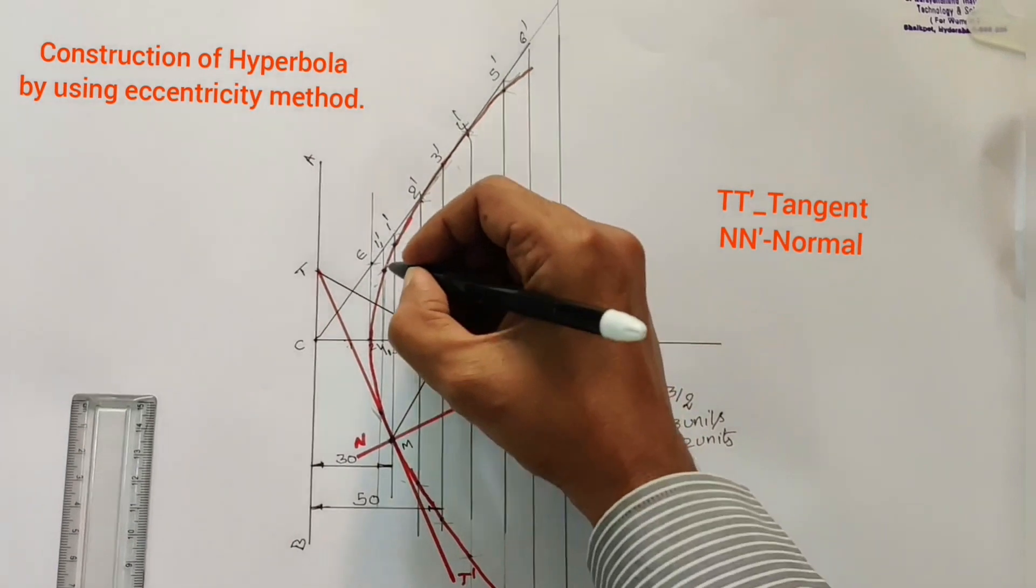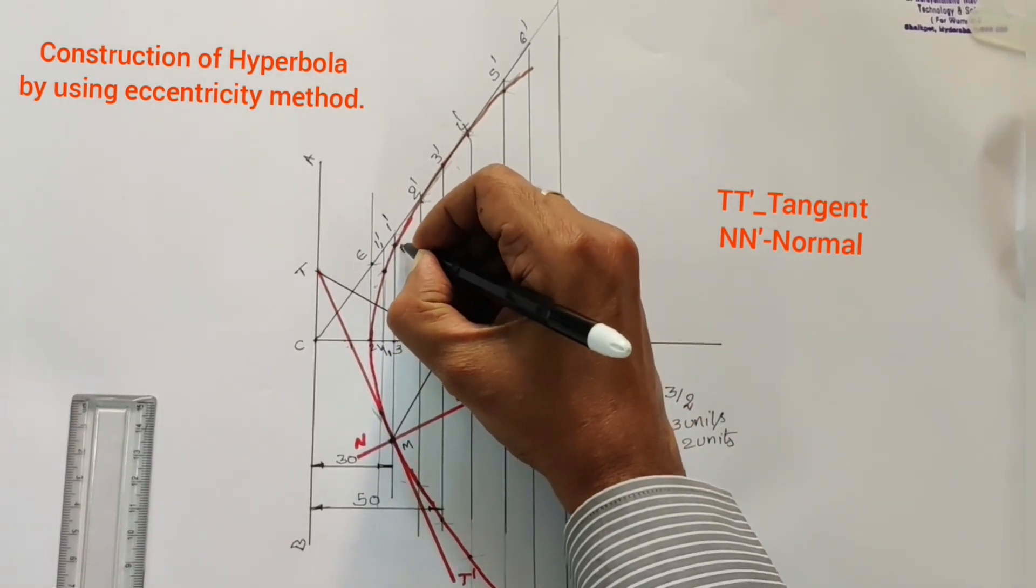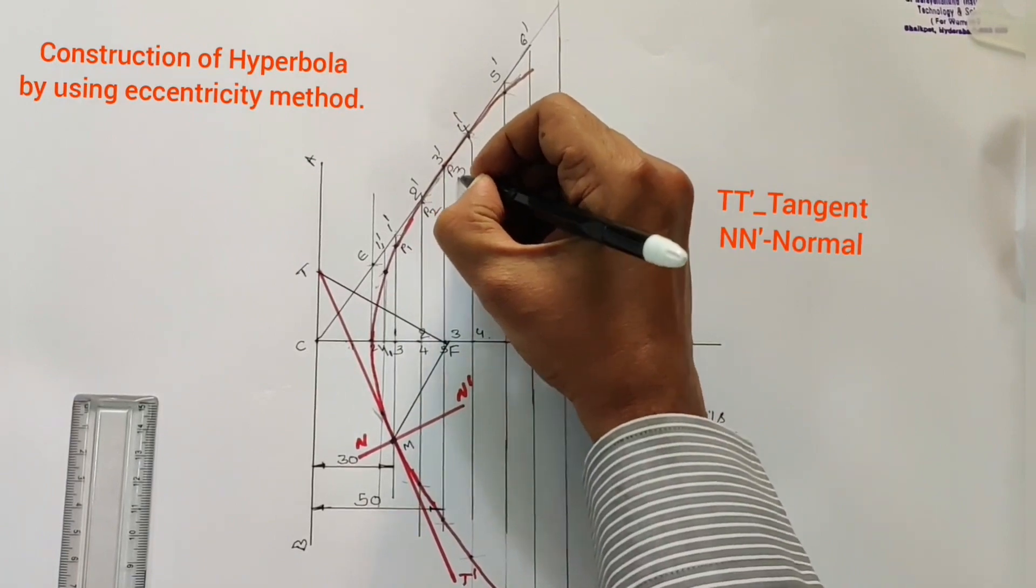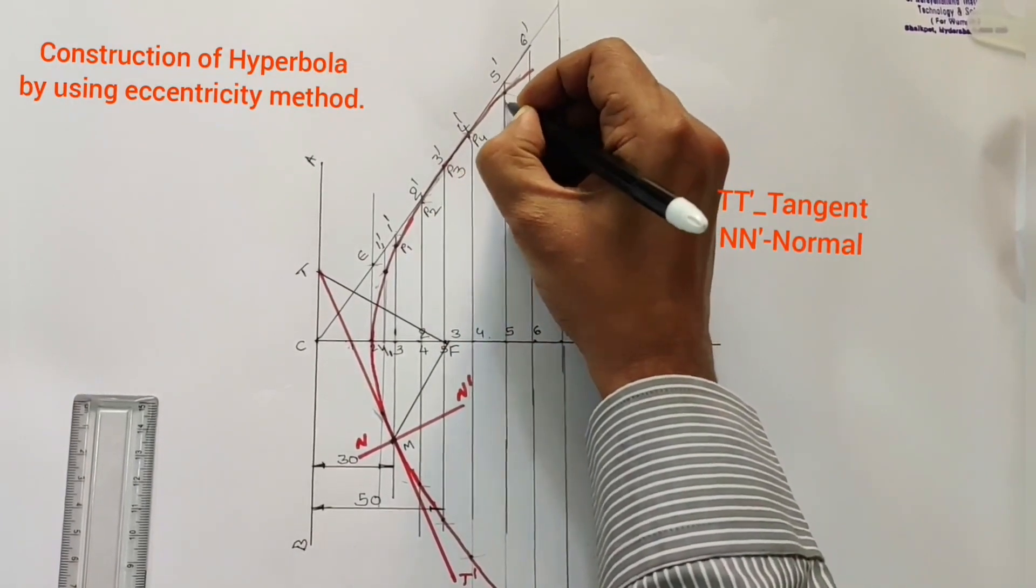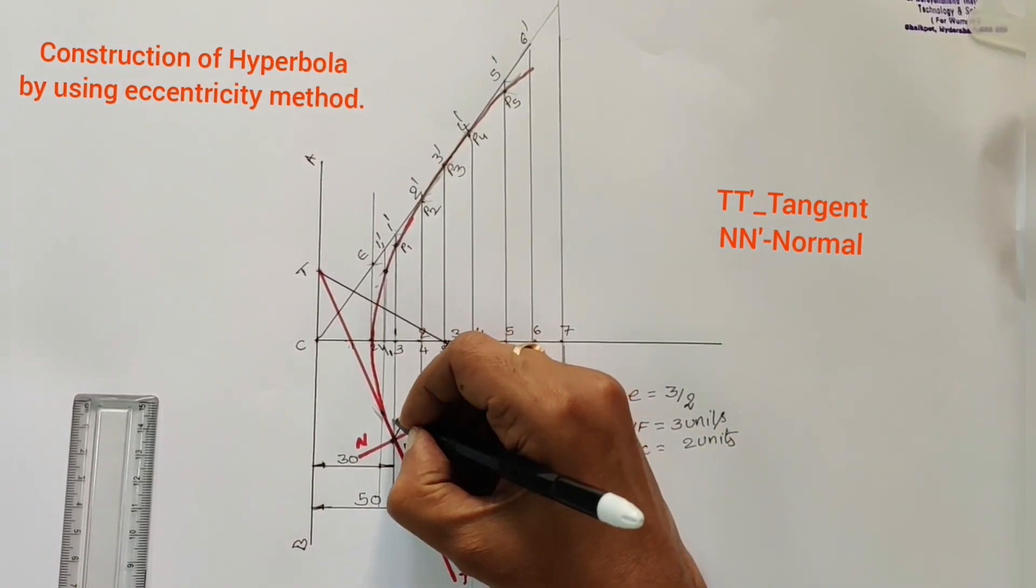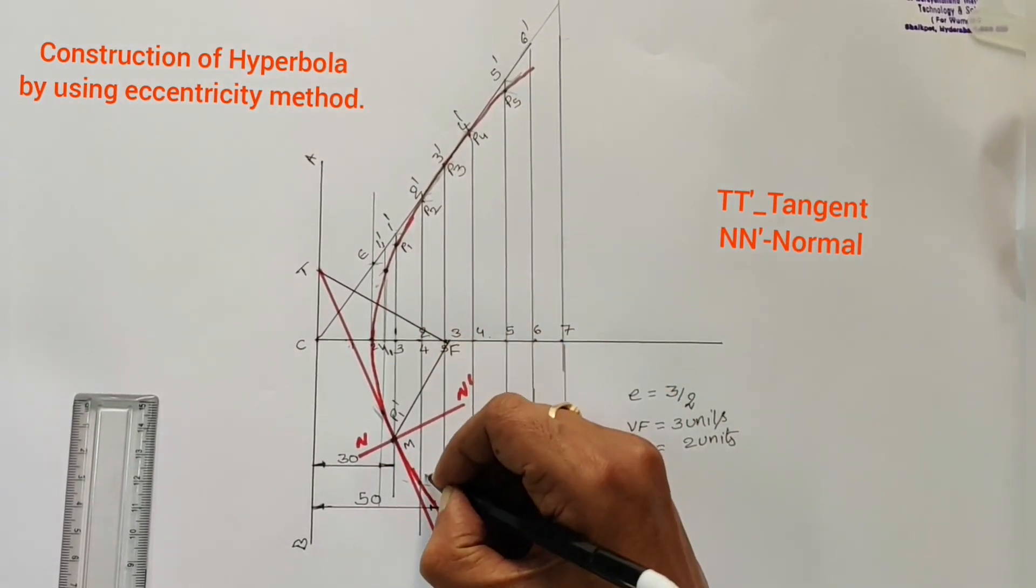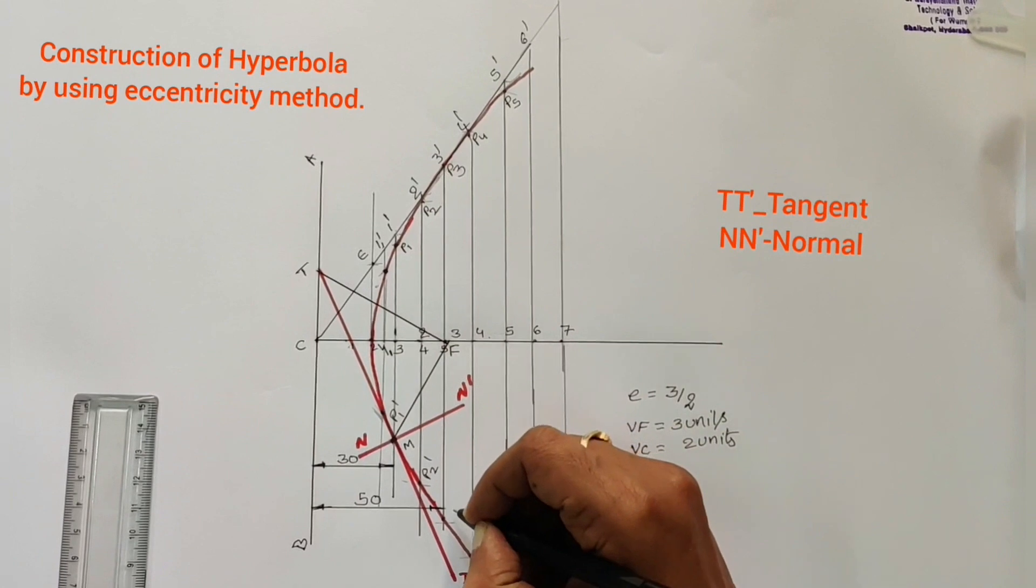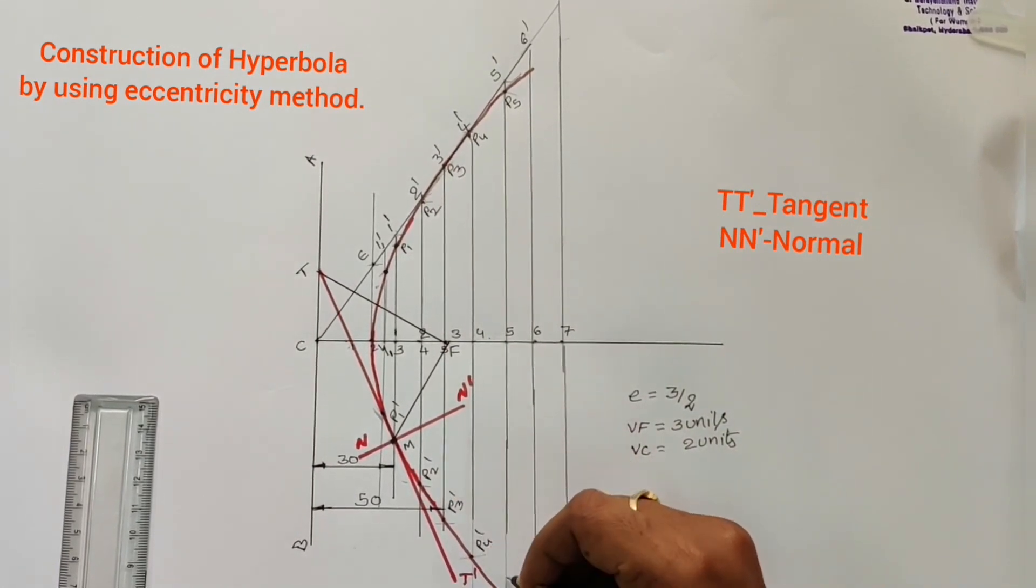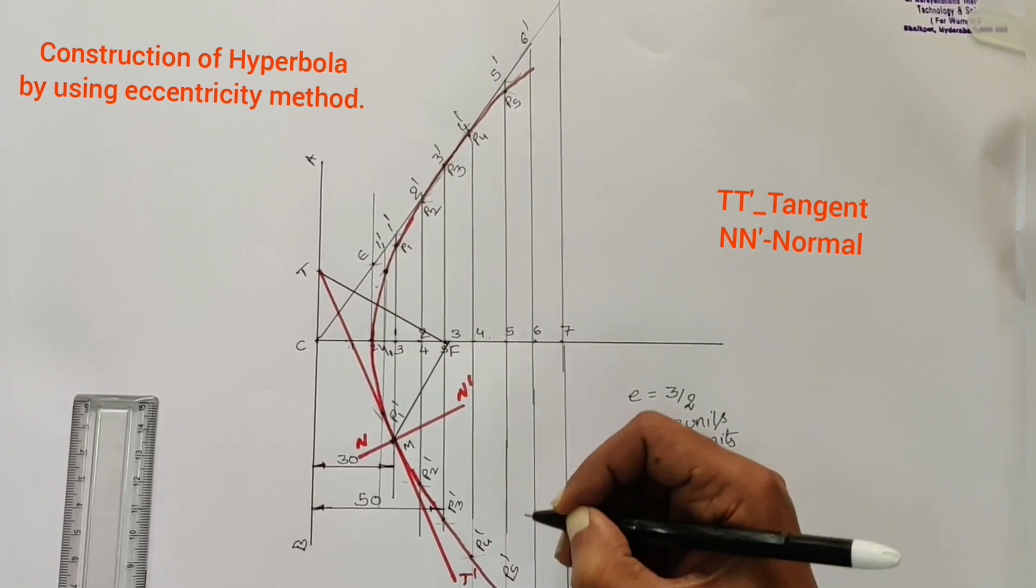Then, name this point as P1, P2, P3, P4, P5 like that. Here, P1 dash, P2 dash, P3 dash, P4 dash, P5 dash.